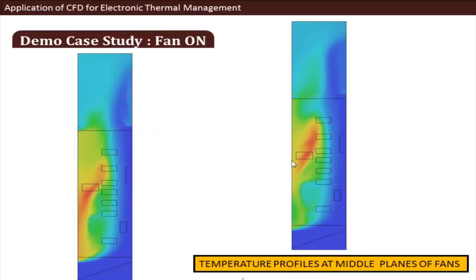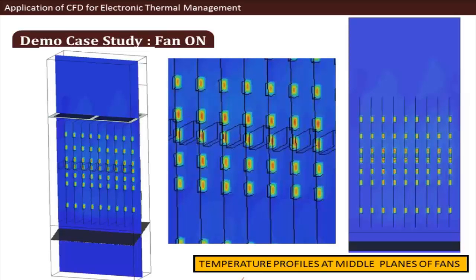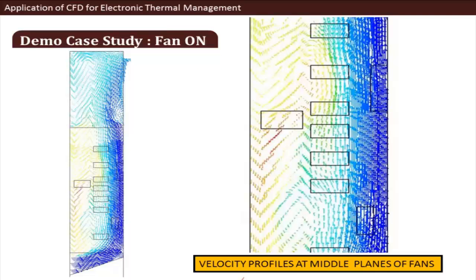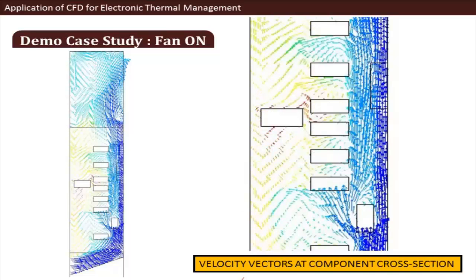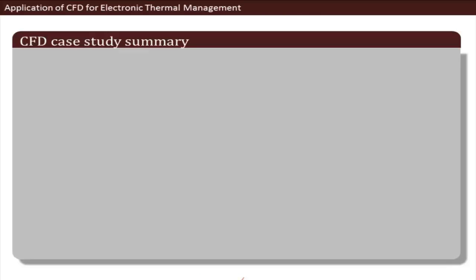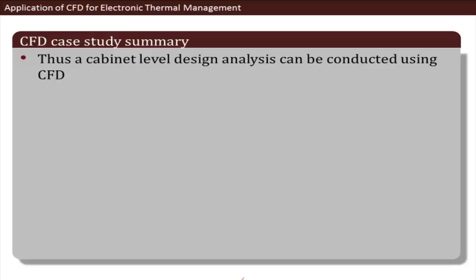There is still some flow imbalance — one side of the PCB heats up more than the other — but temperatures remain within operational range. Cut-section views show the temperature of each component, and vector plots confirm significantly higher air recirculation compared to the fans-off case. In summary, CFD has been applied to study a cabinet-level design, and similar analyses can be performed for device-level and board-level models.